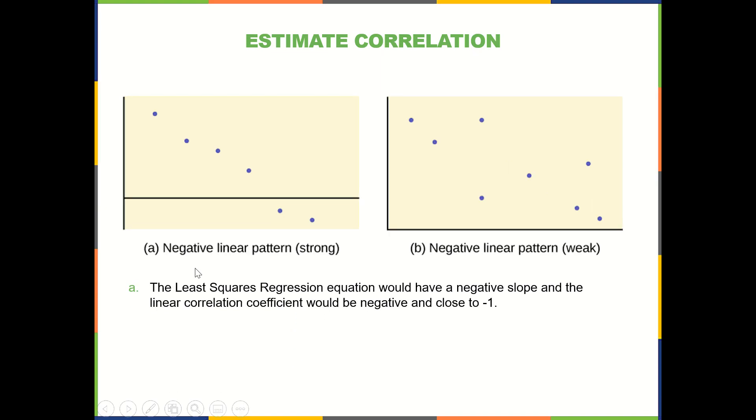In this example, we have negative trend that's strong. So we would see a negative slope on the regression line. And also our correlation coefficient r would be negative and close to negative 1.